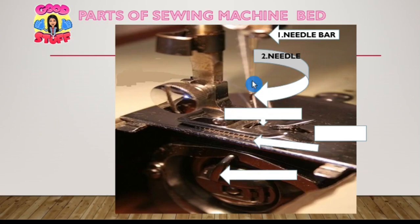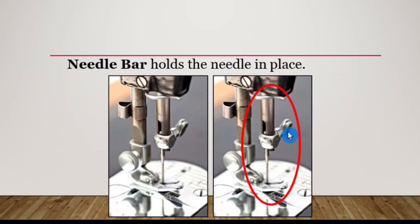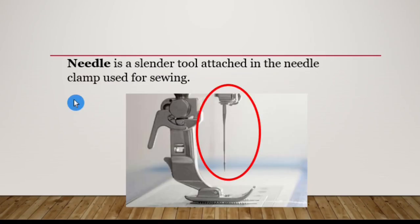So the needle bar holds the needle in place with the use of a clamp and a screwdriver to adjust if loose or to tighten. The next is the needle — the needle is a slender tool attached in the needle clamp, used for sewing.